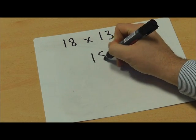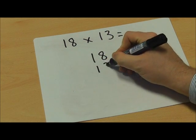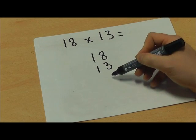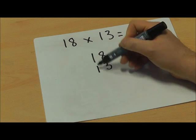As ever I'm going to put my numbers into columns according to their place value so I've got the 8 and the 3 in the units column and the 1s in the tens column.